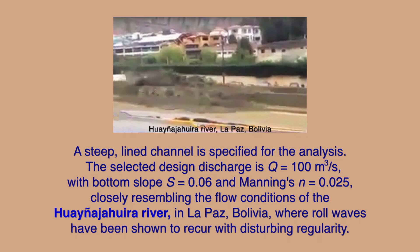A steep-line channel is specified for the analysis. The selected design discharge Q equals 100 cubic meters per second, with bottom slope S equal to 0.06 and Manning's n equal to 0.025, closely resembling the flow conditions of the Guania-Jawira River in La Paz, Bolivia, where roll waves have been shown to recur with disturbing regularity.